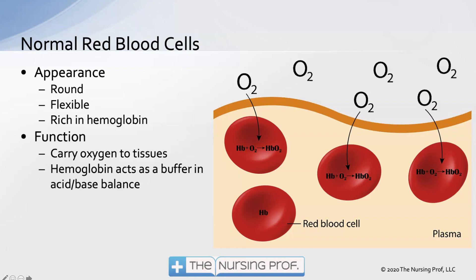These are some normal looking red blood cells. Their appearance is round, they're flexible so they can squeeze through those tiny little capillaries, and they'll be rich in hemoglobin so they're able to carry oxygen to the tissues. The illustration shows the process of developing oxyhemoglobin and releasing oxygen at the tissue level. Hemoglobin also acts as a buffer in acid-base balance.